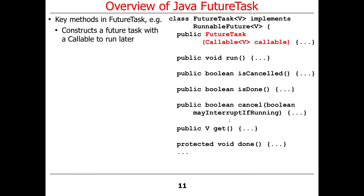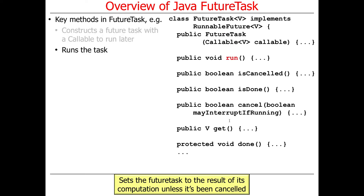The FutureTask constructor does something quite interesting. It takes a callable — a two-way abstraction where you give it something to do and it returns a value. You can use a lambda expression or method reference. This callable gets tucked away and used later when the run method is called. When run is called, it forwards to the call method on the callable to do the work. It also sets the result of the computation unless the task has been canceled.